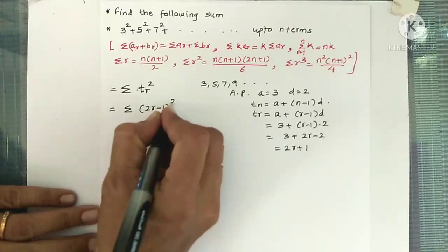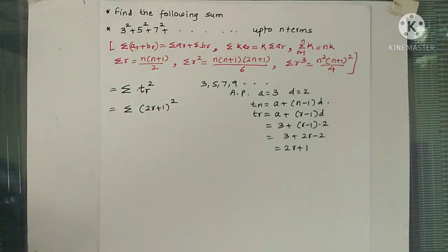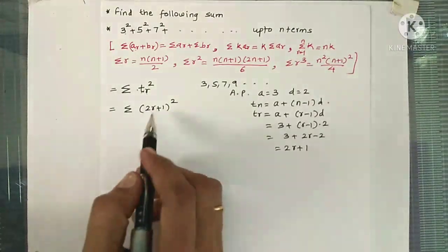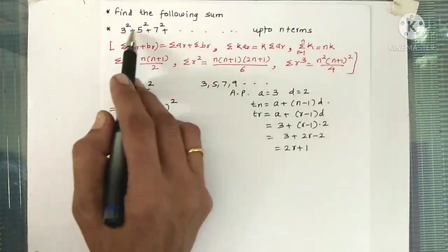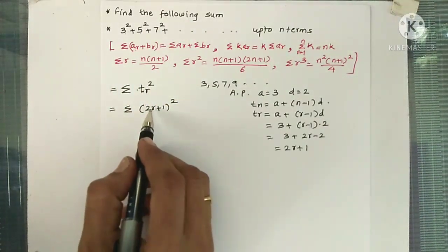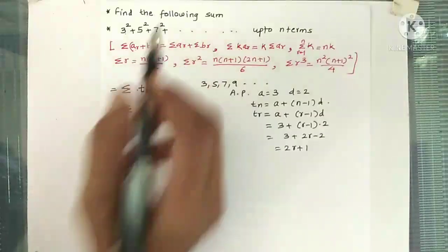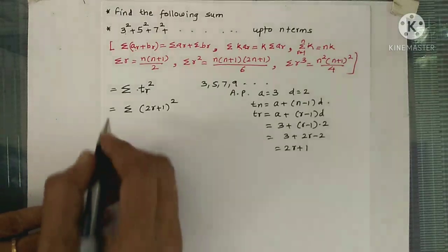Let's verify this is correct. If r equals 3, we should get 7 square as it is the third term. Putting r=3: 2 times 3 is 6, plus 1 is 7, so we get 7 square. This is correct. Always substitute a value of r to verify.